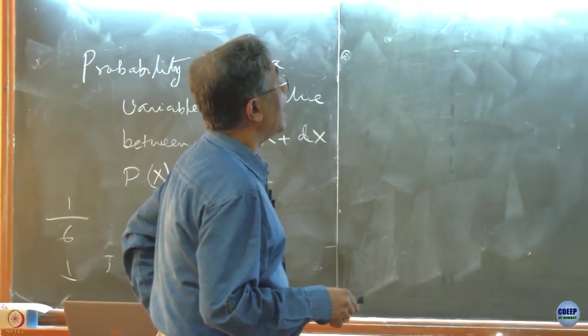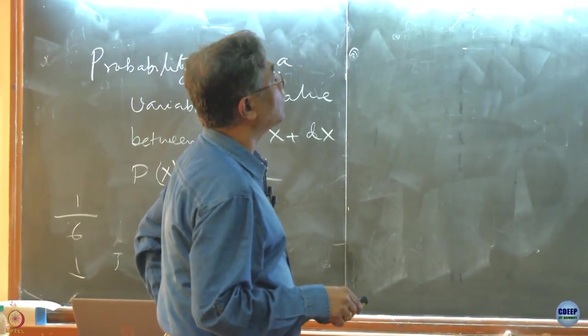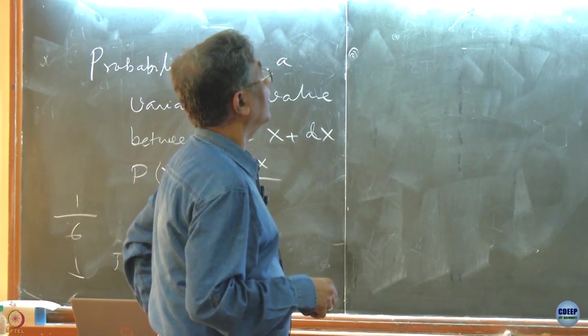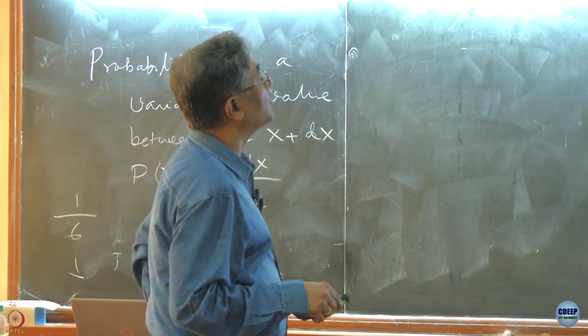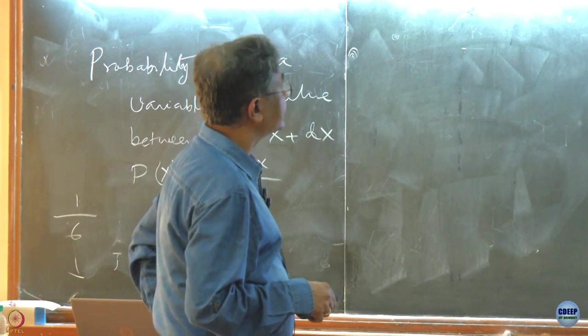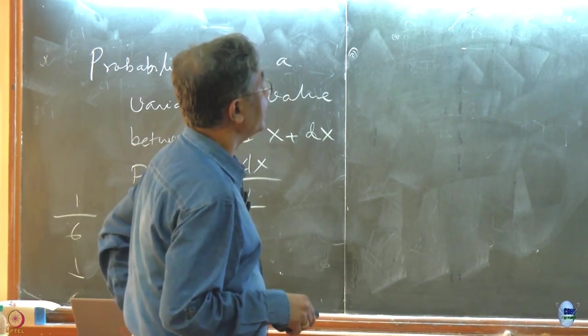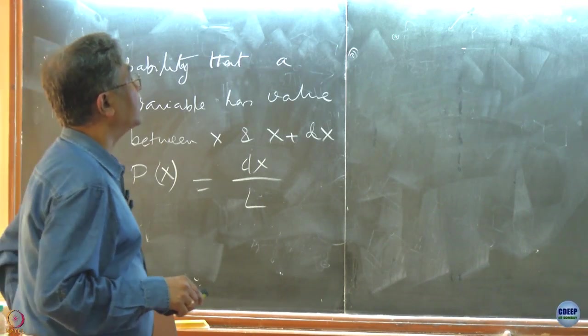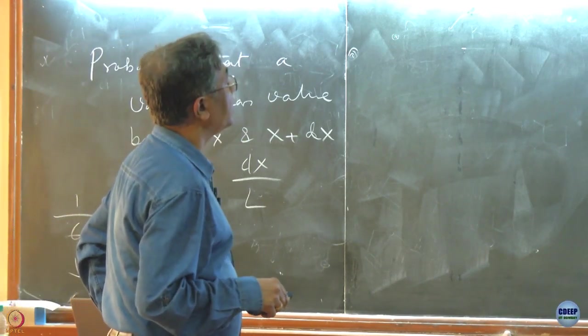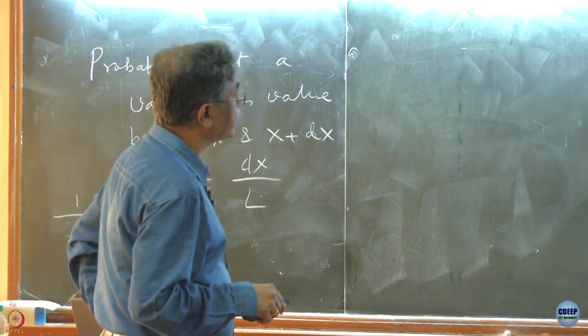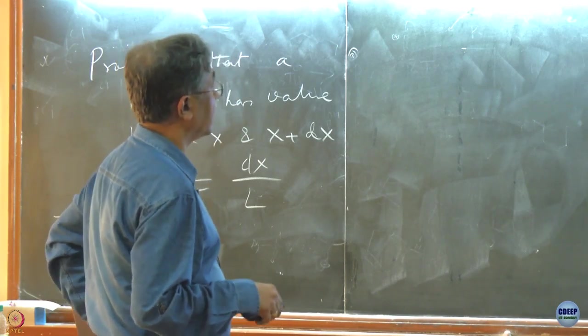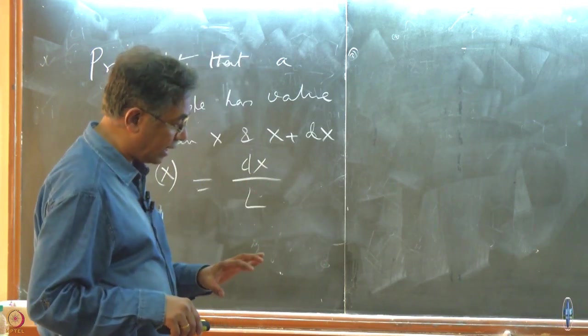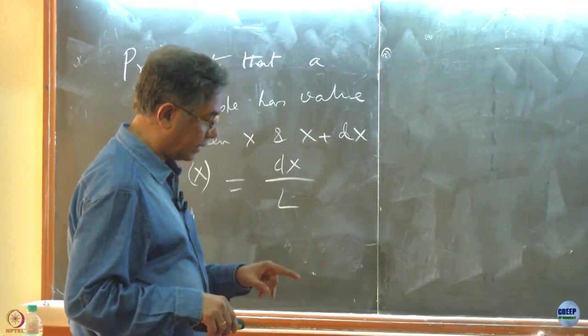Now, if we can ask the question: given an event A, what is the probability of the occurrence of B? This is called the conditional probability - that I give you information. If A has already occurred, then probability of B depends on that A has occurred.